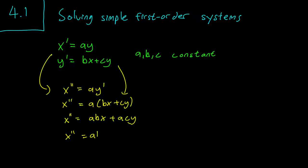So we have abx + cay equal to x'' from this equation. Since ay = x', this is just going to be equal to x'' = abx + cx'.